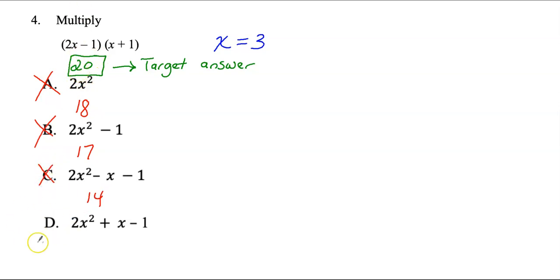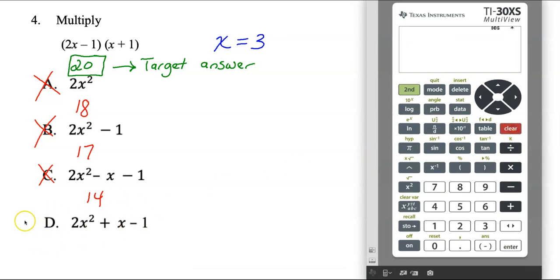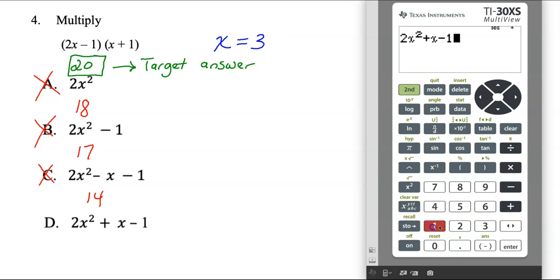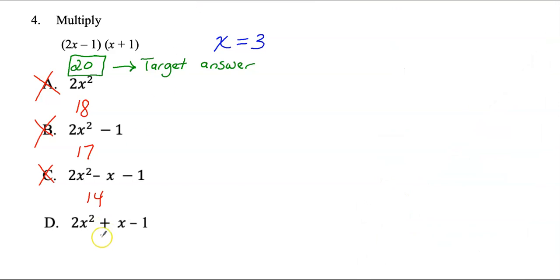But since we have time, let's check D: 2x² plus x minus 1. Punch it in and hit enter — I get an output of 20. That matches up with my target answer. So D is my answer.